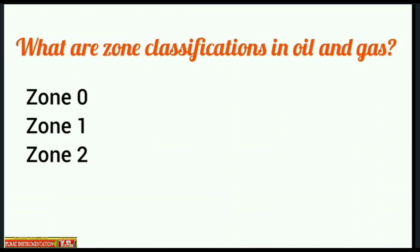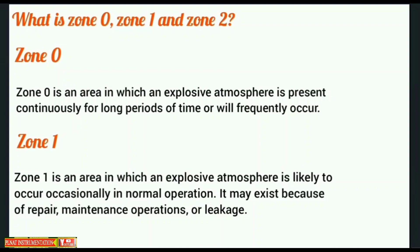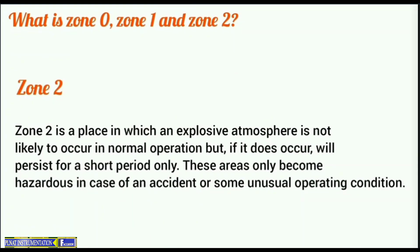What are the zone classifications in oil and gas? Zone 0, Zone 1, Zone 2. Zone 0 is an area in which an explosive atmosphere is present continuously, for long periods of time, or will frequently occur. Zone 1 is an area in which an explosive atmosphere is likely to occur occasionally in normal operation. It may exist because of repair, maintenance, operation, or leakage.